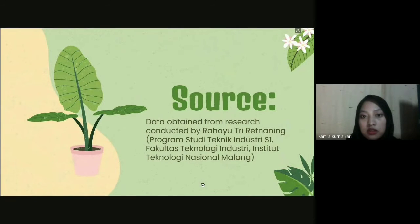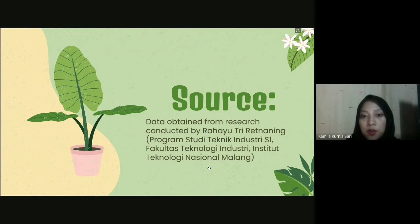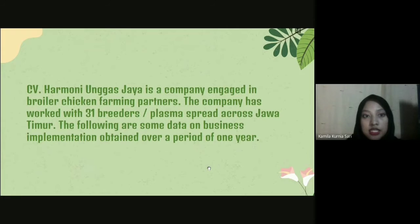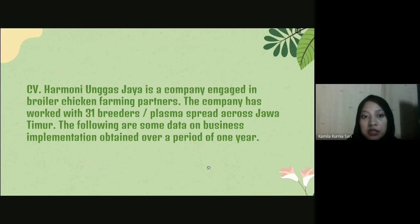This data is obtained from research conducted by Rahayu Tri Retmaning from the program study of Industrial Engineering S1, Fakultas Teknologi Industri, Institut Teknologi Nasional Malang. The data concerns CV Harmony Unggas Jaya, a company engaged in broiler chicken farming partnerships, which has worked with 31 breeders or plasma spread across East Java. The following data covers business implementation over a period of one year.